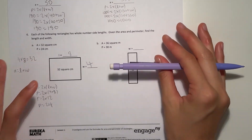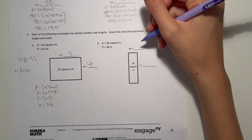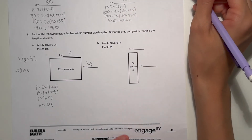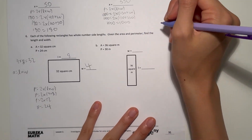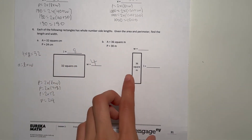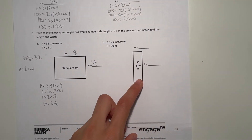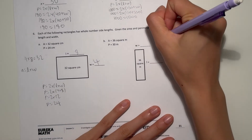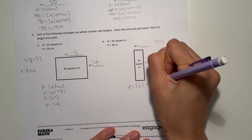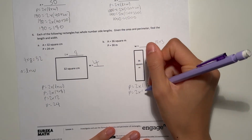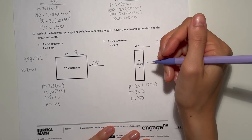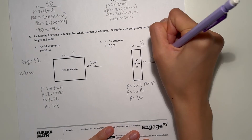For B, the area is 36 and this rectangle looks kind of skinny. 6 times 6 is 36, but that would make it a square. So let's try 12 times 3, which is 36. The area works out. For perimeter: 12 plus 3 is 15, and 2 times 15 is 30. So width is 3 and length is 12.